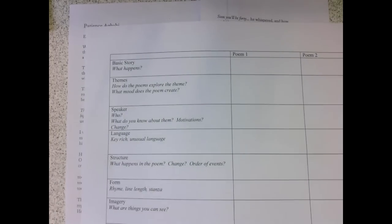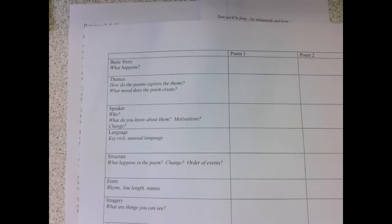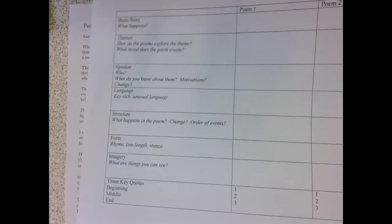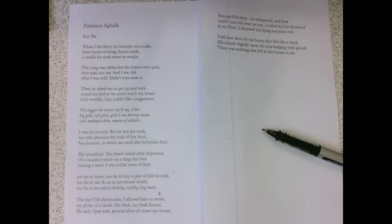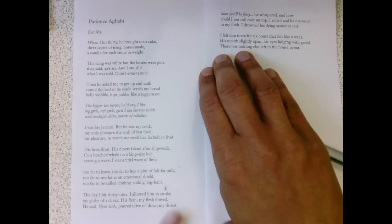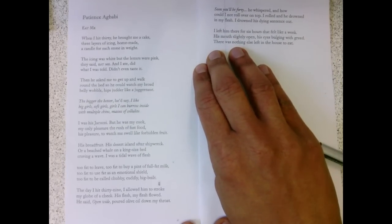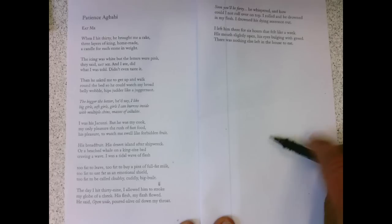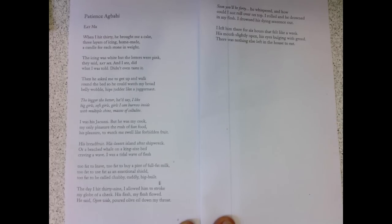We're going to look at some of just the basics in this poem: the speaker, the themes, the language, the structure, the form, the imagery, and some key quotes. I'm going to do this by basically reading the poem, then we'll fill out the table, I'll do that again for the second poem, and then we can start to construct an essay.